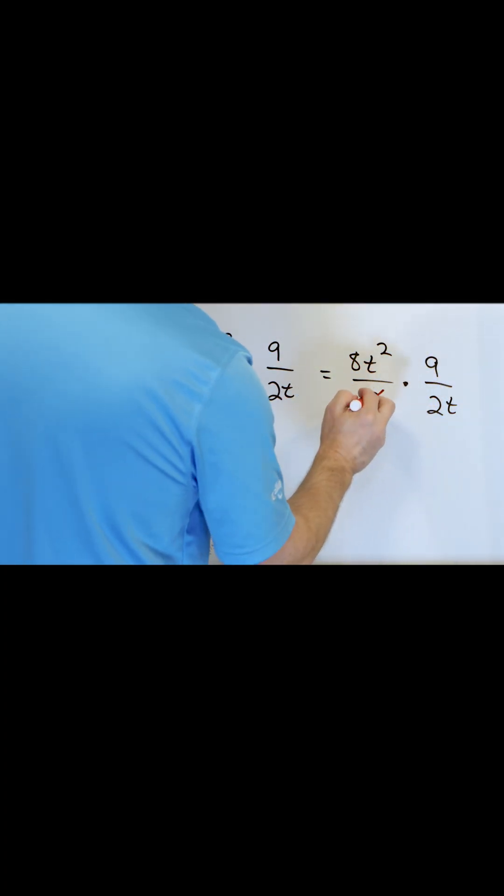Look here. We have a 3 and a 9. 3 divided by 3 is 1, 9 divided by 3 is 3. We have an 8 and a 2. 2 divided by 2 is 1, 8 divided by 2 is 4.